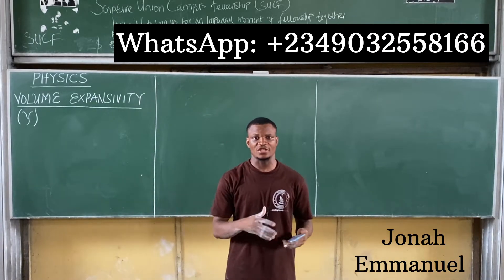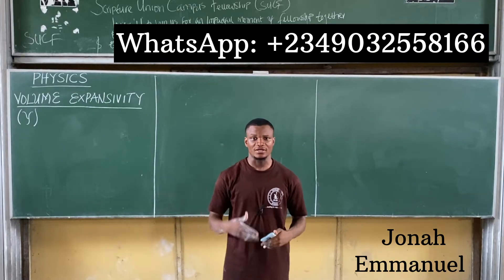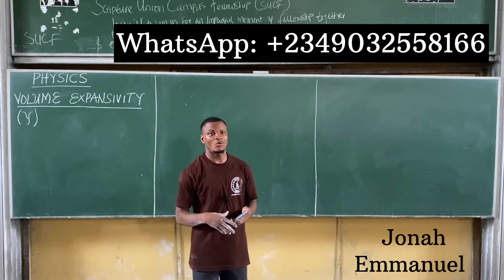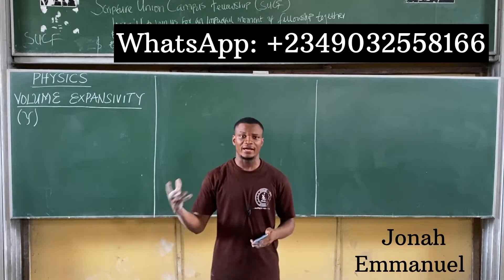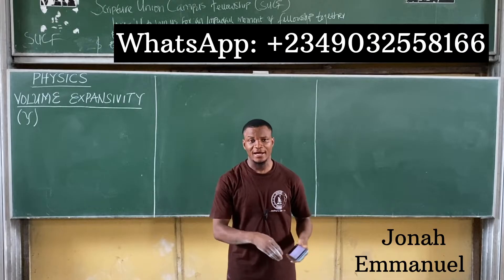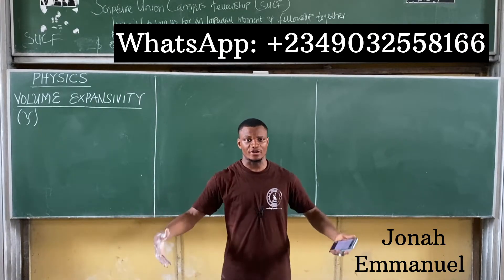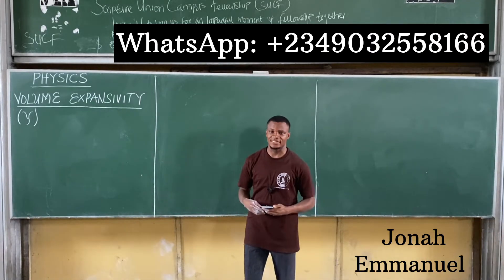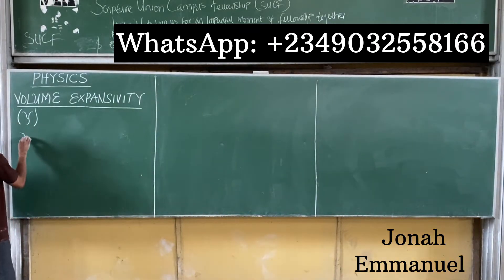By definition, cubic expansivity is simply the change in volume per unit volume per degree rise in temperature. When solids are heated, they increase not just in length — as we dealt with in linear expansivity — or area — as in area expansivity — but also in volume, and that's what we deal with in volume expansivity.